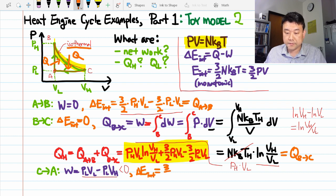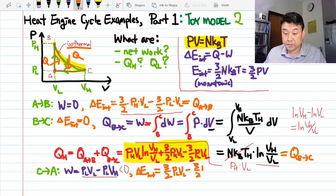Change in internal energy is calculated the same way as the previous example. It's three halves, the ending point, PLVL minus three halves, the starting point, PLVH.